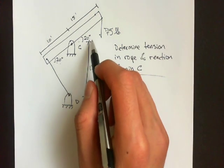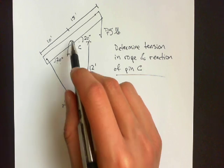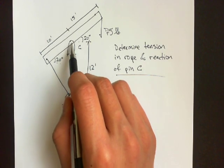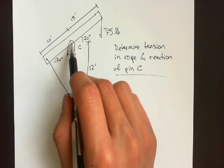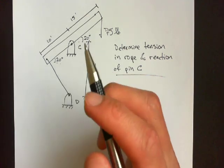To solve for this, we want to sum the moments about point C. If we do that, then our only variable would be the tension in this force, which is what we want.